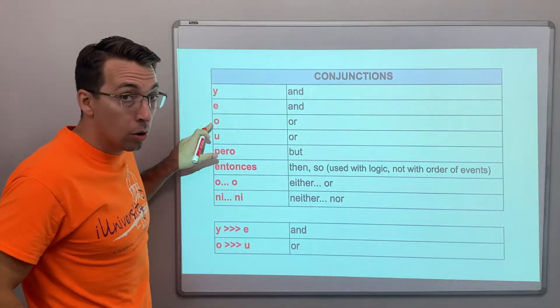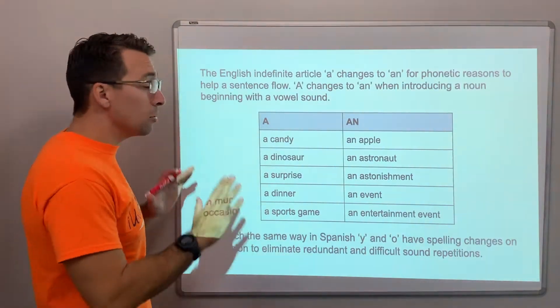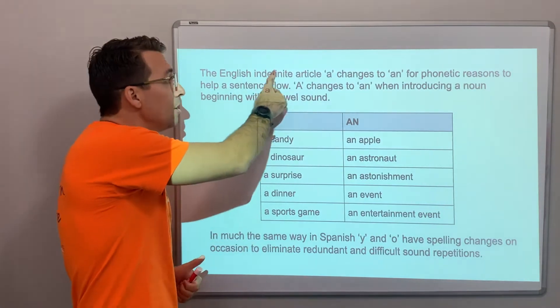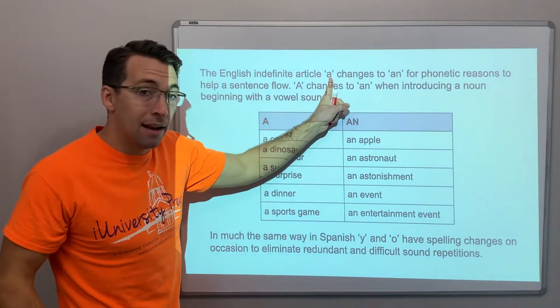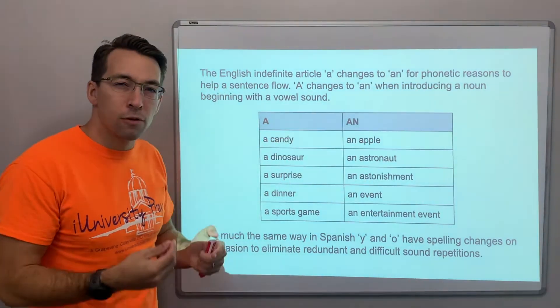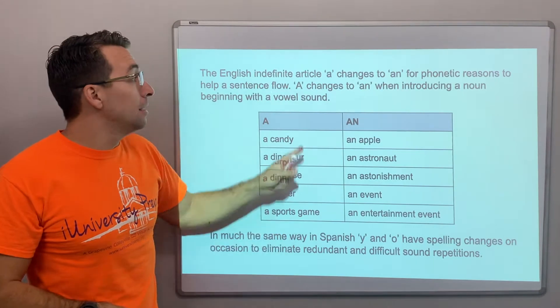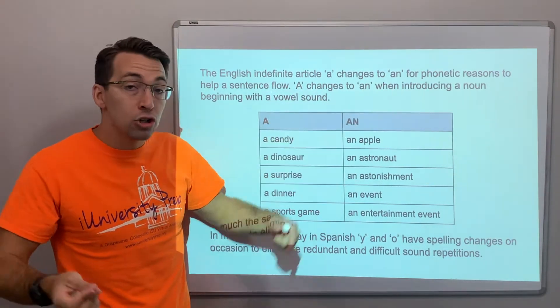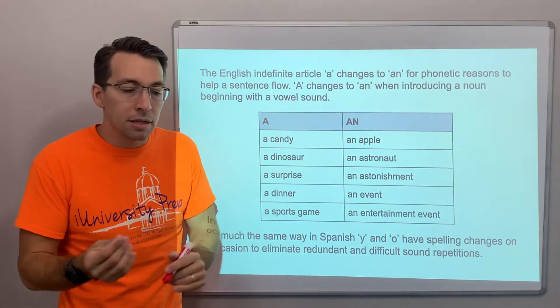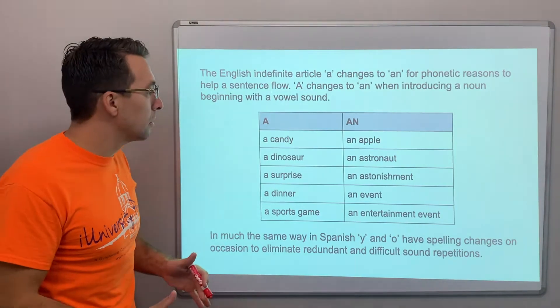E, o, u. Okay. So, with indefinite articles, okay, the English indefinite article a changes to an for phonetic reasons, for like sound reasons, to help a sentence flow. A changes to an when introducing a noun beginning with a vowel. This is something we learn and we know instinctively as native English speakers.